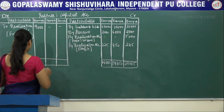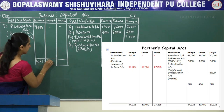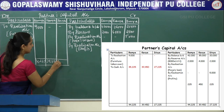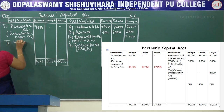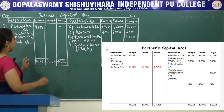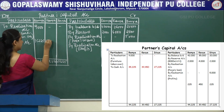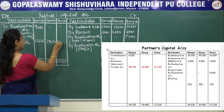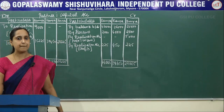Balancing partners capital account — the same totals carry to the debit side: 44,225; 39,450; 27,225. To cash account: Ramya gets 44,225 minus 9,000 (furniture taken) = 35,225; Kavya 39,450; Divya 27,225. This completes the partners capital account.